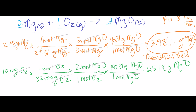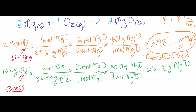This lower value — from the magnesium calculation — is our answer and is known as the theoretical yield. It's how much product we can make given these ingredients. This is the limiting reagent because it's what limits the production of magnesium oxide. The oxygen is left over, so oxygen is known as the excess reagent.